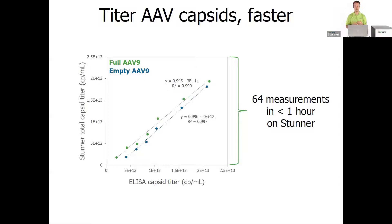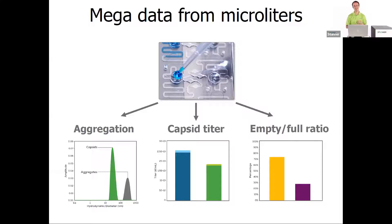It's a far cry from an ELISA that would require a lot more development to be specific to each unique capsid. Comparing Stunner's titer results against ELISA: on the y-axis is Stunner's total capsid titer, on the x-axis is ELISA results across a dilution series, done for both full and empty AAV9. We want slopes close to one and very high R-squared values — and indeed we have slopes not far off from one and R-squared values above 0.99. This represents 64 measurements done in about 45 minutes on Stunner, all hands-off after the plate was loaded. You get aggregation results, capsid titer, and empty-full ratio — label-free, standard-free, hassle-free gene therapy quant.